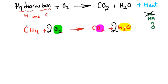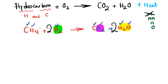Double check: one carbon equals one carbon ✓; four hydrogen equals two times two equals four ✓; oxygen: two times two equals four on the left, two plus two equals four on the right ✓. This is a balanced chemical reaction.